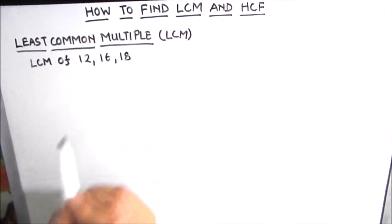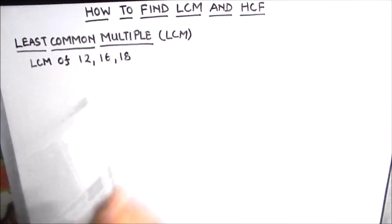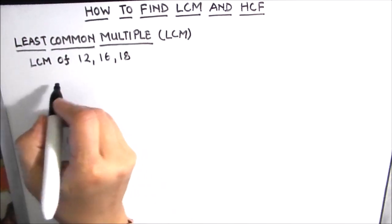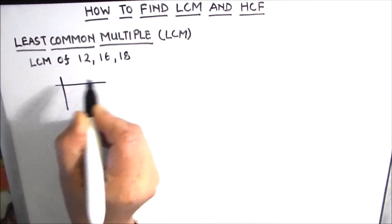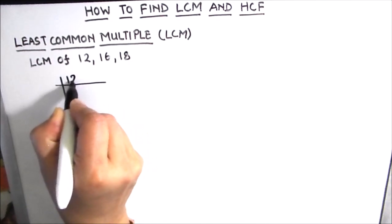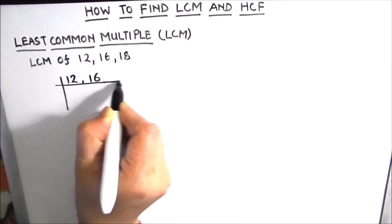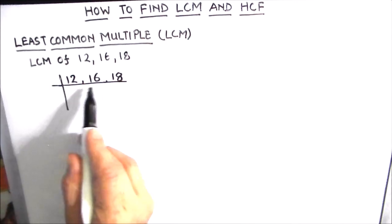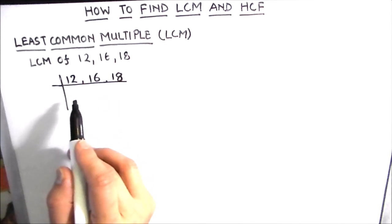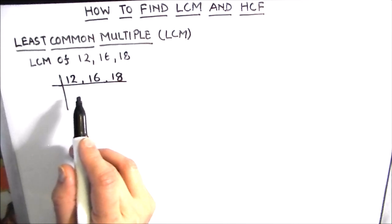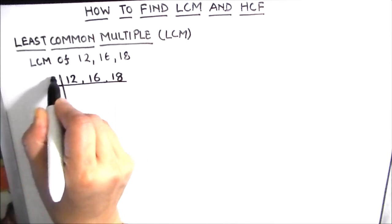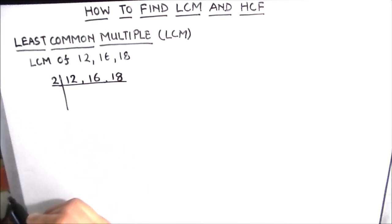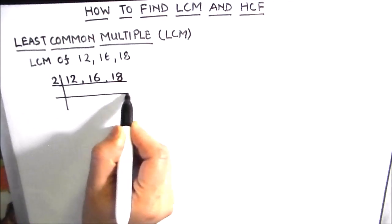For finding the LCM we will be using the prime factorization method. In this method we divide these numbers by prime numbers and find their common factors. We are going to make a ladder and write the three numbers — 12, 16, and 18 — on it. Since all three numbers are even, our first common factor will be 2, as 2 is a factor of all even numbers.